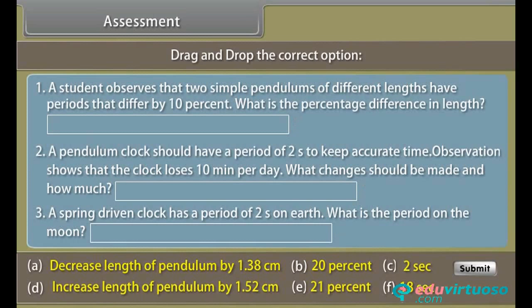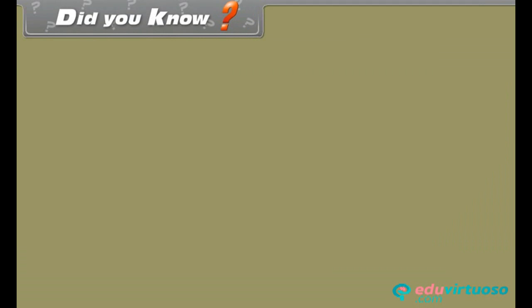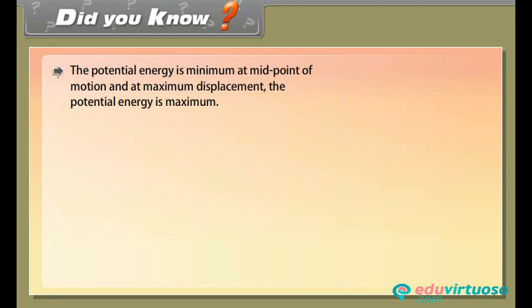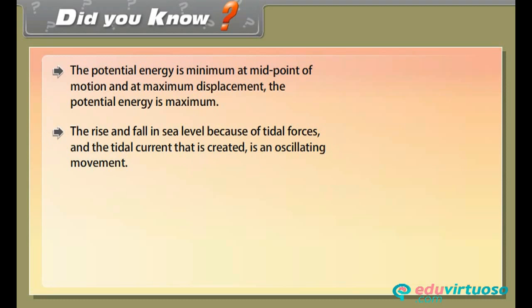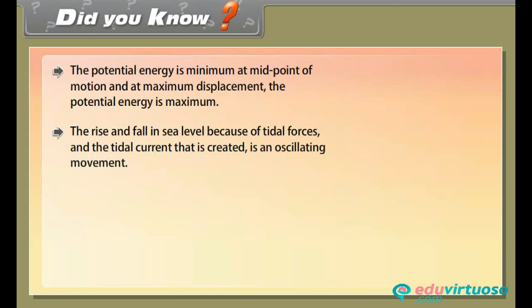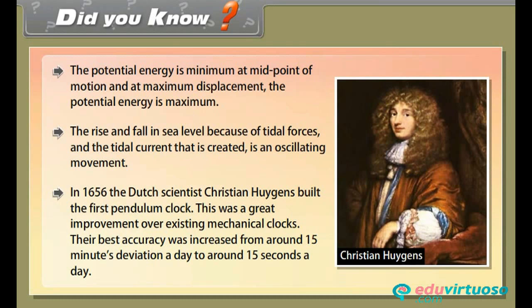Assessment: drag and drop the correct option to test your learning. Did you know? The potential energy is minimum at the midpoint of motion and maximum at maximum displacement. The rise and fall in sea level is due to tidal forces, which create an oscillating motion. In 1656, Dutch scientist Christiaan Huygens built the first pendulum clock, improving accuracy from around 15 minutes deviation per day to around 15 seconds per day.